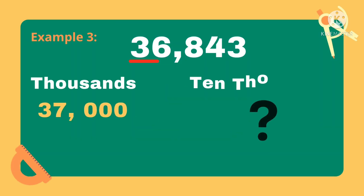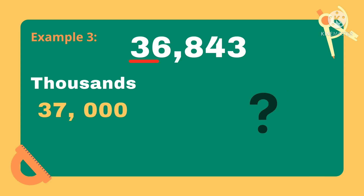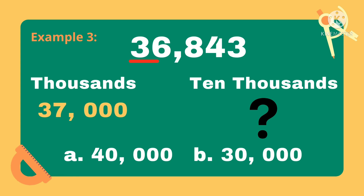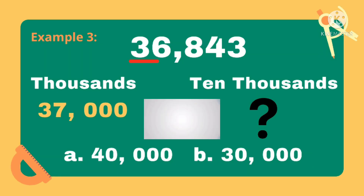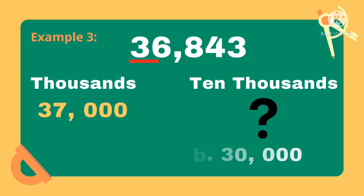How about if we round this number to the nearest ten thousands? What is the answer? A. 40,000 or B. 30,000? Excellent! The correct answer is letter A, 40,000. The next digit to the right of the underlined digit is 6, and since it also belongs to 5 and above, we add 1 to the digit to be rounded, so 3 plus 1 equals 4. Therefore, 36,843 rounded off to the nearest ten thousands is 40,000.